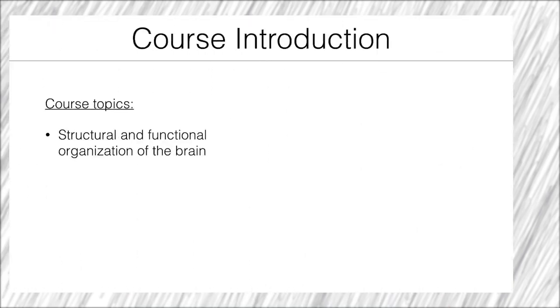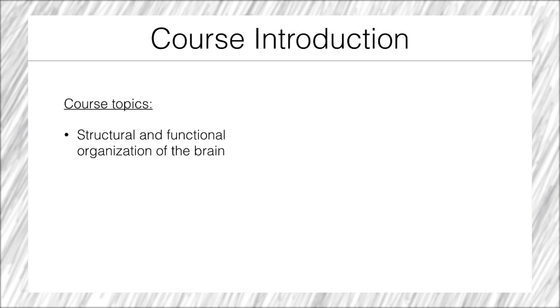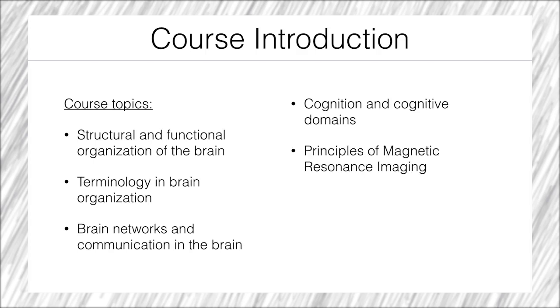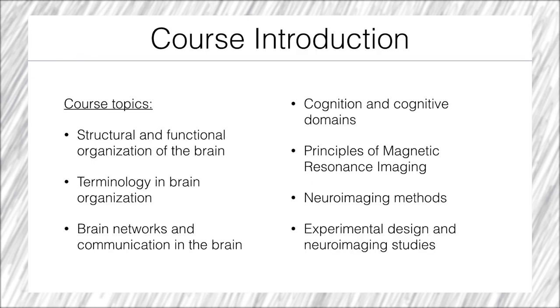In this course, we will cover a number of topics to help us understand neuroimaging data, which will include the structural and functional organization of the brain, terminology of brain organization, brain networks and communication in the brain, cognition and cognitive domains, the principles of magnetic resonance imaging, neuroimaging methods broadly, and experimental design in neuroimaging studies.